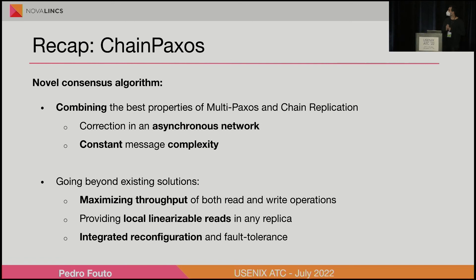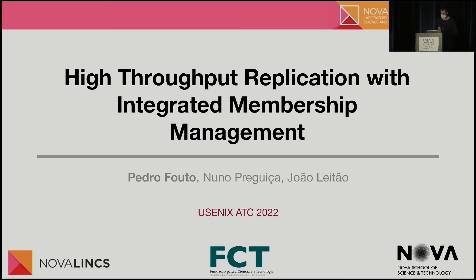Just a quick recap: we proposed a consensus algorithm which combines aspects of MultiPaxos and chain replication. We were able to maximize the throughput of both read and write operations while providing locally linearizable reads without any extra communication, and integrating reconfiguration and fault tolerance in the algorithm itself. The paper is available — check it out, and I'm open to questions. Thank you.